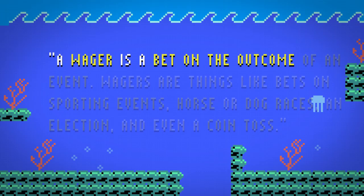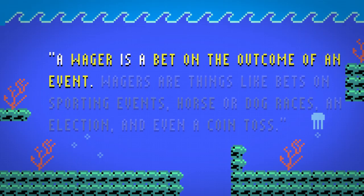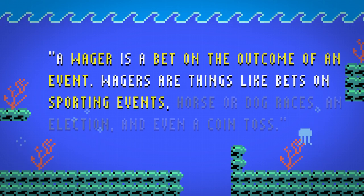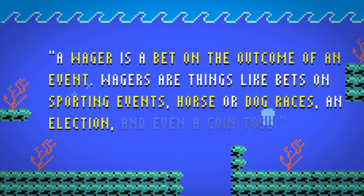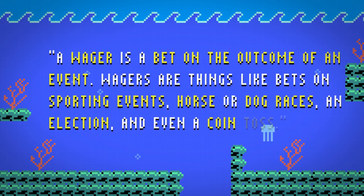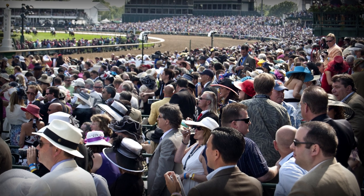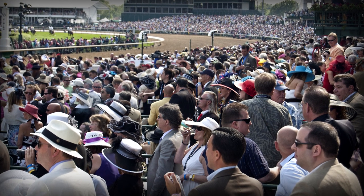A wager is a bet on the outcome of an event. Wagers are things like bets on sporting events, horse or dog races, an election, even a coin toss. You can wager on just about anything, and people do this all the time. I once made a bet about how long the national anthem was going to be sung at a football event. While wagers are often related to games, like a bet on a sports game, wagering itself isn't often thought of as a game in itself.